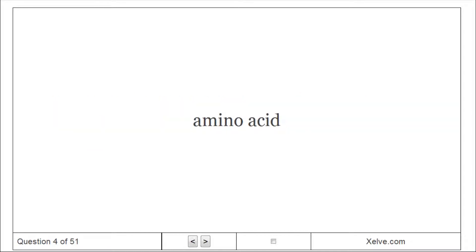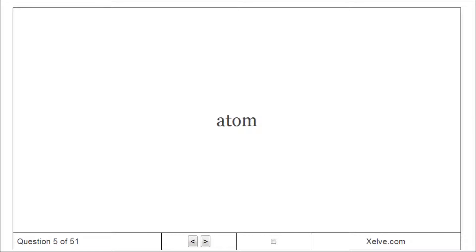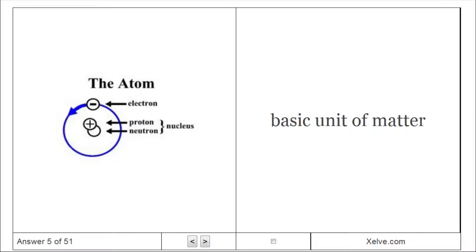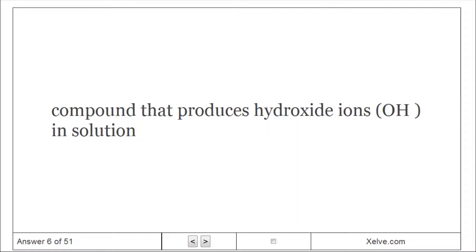Amino acid: Compound with an amino group on one end and a carboxyl group on the other end. Atom: Basic unit of matter. Base: Compound that produces hydroxide ions O in solution.